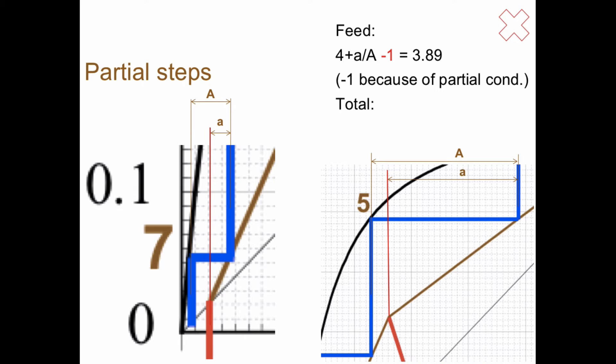And the total, well, it's not seven but it's six point something. So six plus a divided by a, and a divided by a there is 0.52. And then we have to remove both one for the partial condenser and minus one as well for the reboiler.